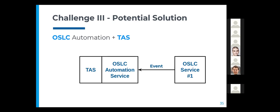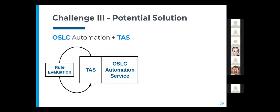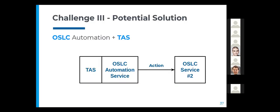Having events and actions defined in OSLC, it is possible to think of an architecture where a TAS has a service in front of it exposing its automation capabilities using OSLC Automation. An OSLC service will work as a source of events for this automation server. Once the event is processed by the TAS, the rules it has stored are evaluated to find the corresponding actions to be executed. The resulting actions will be executed in another OSLC service, completing the integration of the automation provider with the rest of the infrastructure through OSLC.